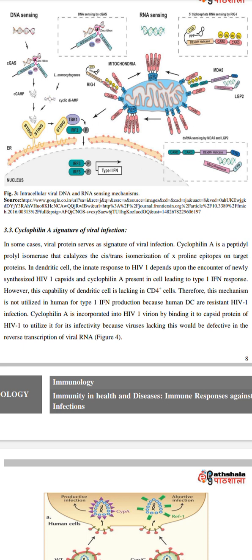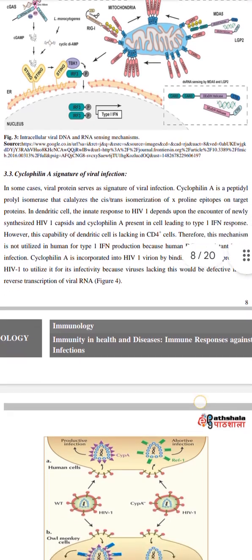Therefore, this mechanism is not utilized in humans for type 1 IFN protection because human disease involves persistent HIV-1 infection. Cyclophilin A is incorporated into HIV-1 virions by binding to the capsid protein of HIV-1, and viruses lacking this would be defective in reverse transcription of viral DNA.